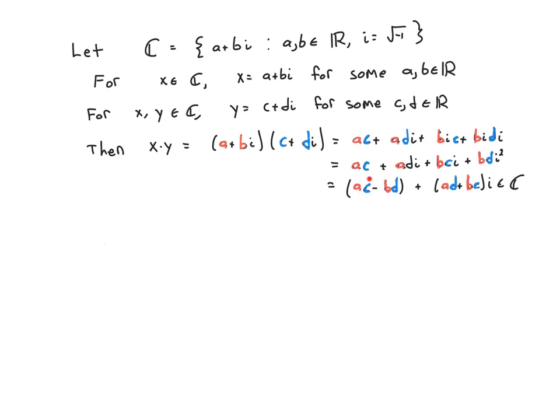This first term here is a difference of a product of real numbers, so it is a real number. And this coefficient of i is the sum of product of real numbers, so it is also a real number. So the point is if you multiply two complex numbers you end up with something of the form real number plus real number times i. The product of any two complex numbers is a complex number.